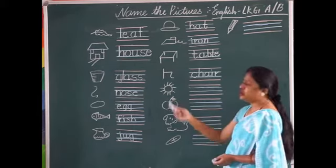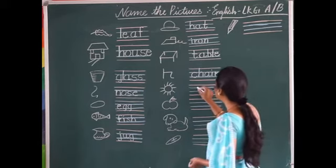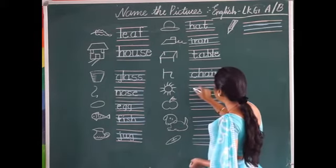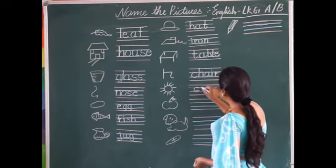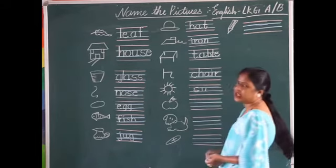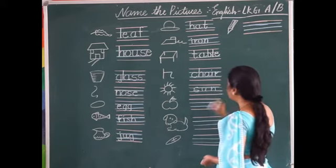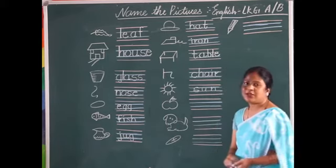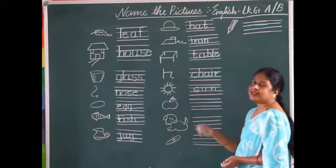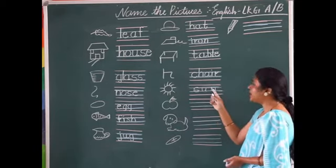Now this is a picture of a sun. Joining two curves together makes the letter S. A curve with a tail at the end makes the letter U. A standing line with curves joining both the blue lines makes the letter N. S-U-N, sun. Once more: S-U-N, sun.